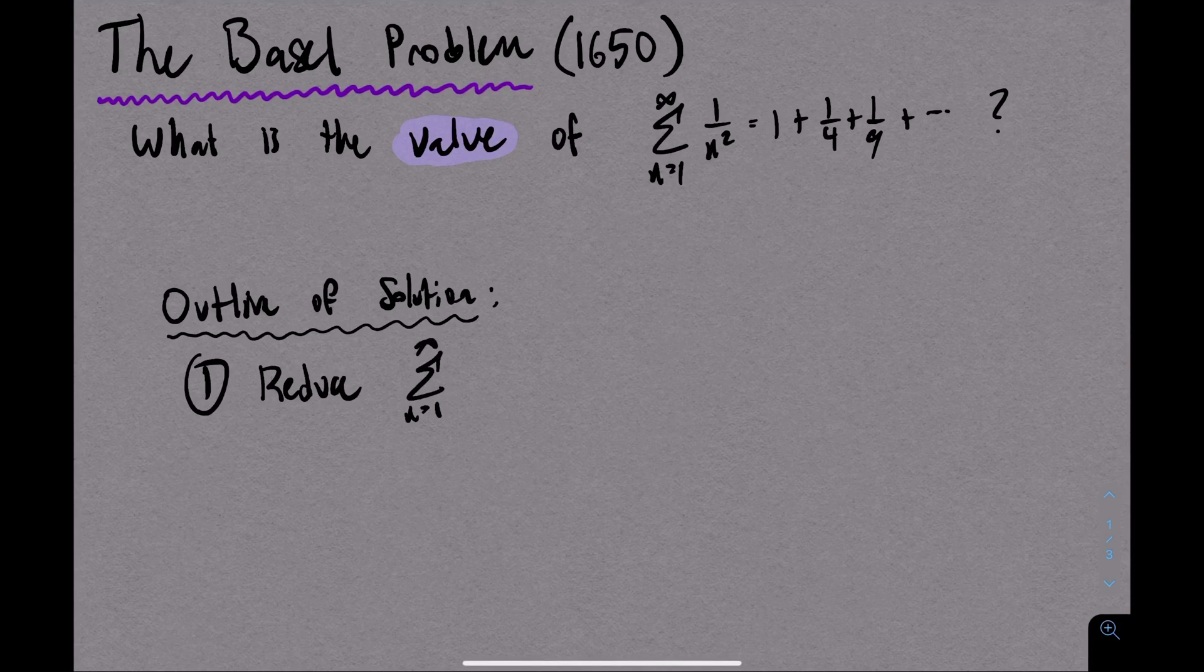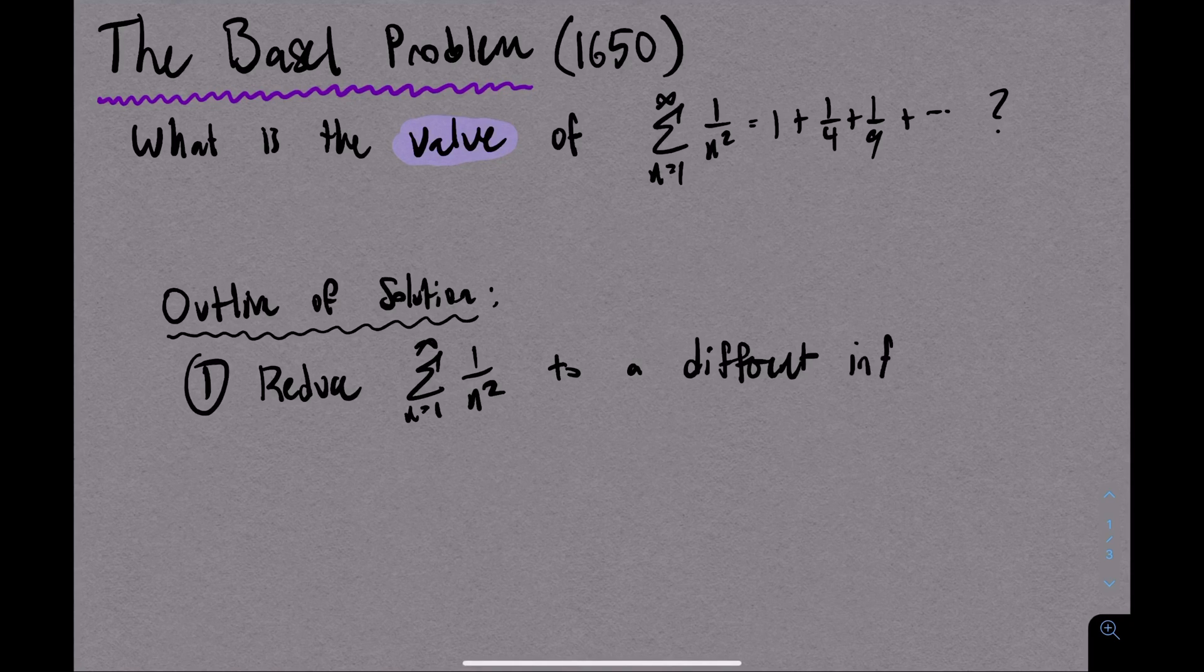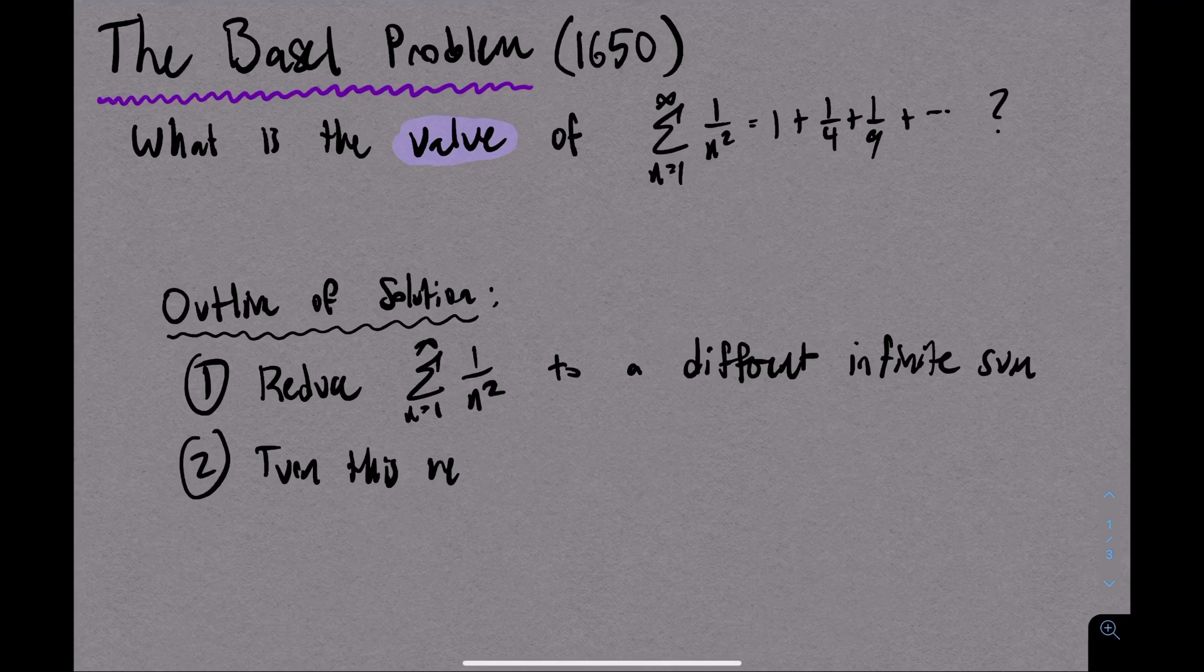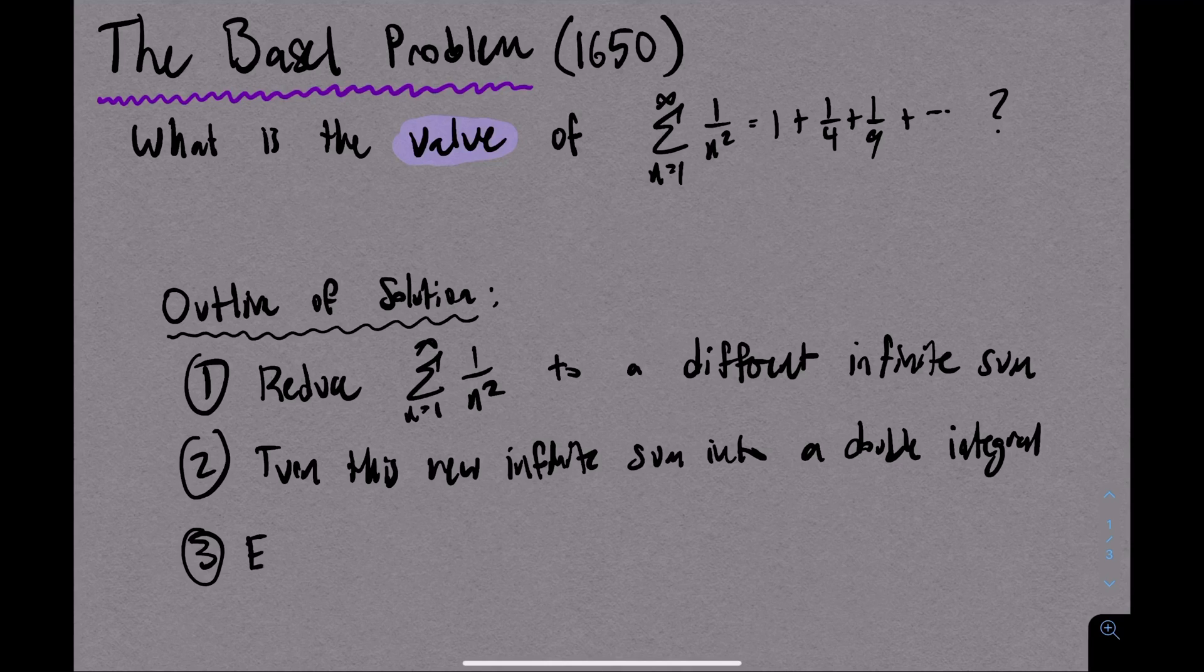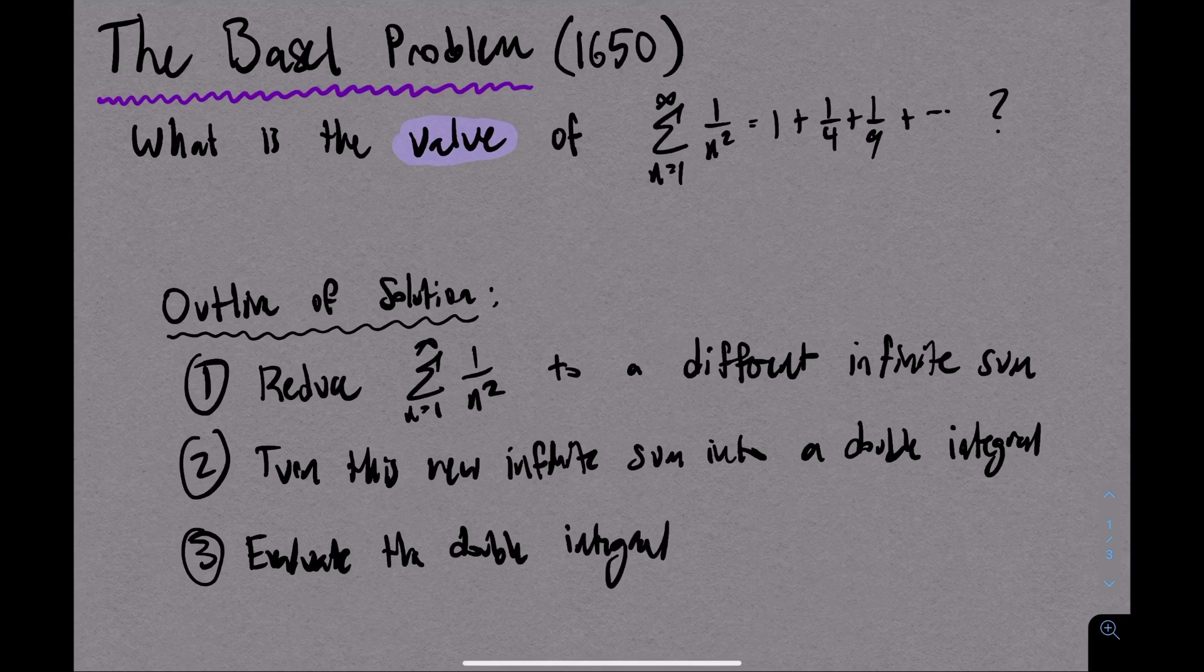Before we get started, I just want to outline the solution so you know what to expect. First, we'll actually manipulate the original infinite sum into a new one. Next, we'll transform that sum into a double integral. And then finally, we'll use perhaps the most clever variable change of all time to finish it off.